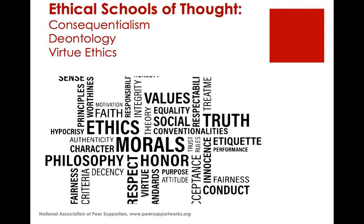A second ethical school of thought is deontology, an ethical theory that uses rules to distinguish right from wrong, often associated with Immanuel Kant. Deontology is simple to apply — it just requires that people follow the rules and do their duty. Unlike consequentialism, which judges actions by their results, deontology doesn't require weighing costs and benefits. This avoids subjectivity and uncertainty because you only follow set rules, but it also means disregarding the possible consequences of actions when determining right from wrong.